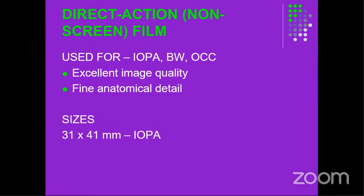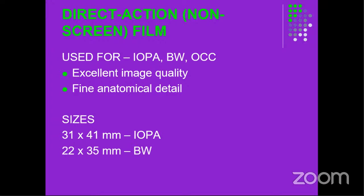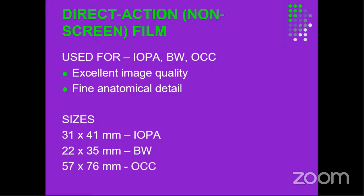We have one that measures 31 by 41 millimeters for the intraoral periapical. For bitewings it is 22 by 35 millimeters. For occlusal radiographs, which is a bit larger, it is 57 by 76 millimeters. For bitewings we can also have one that is a bit longer than the standard, used to take long bitewings, so you are able to get all the teeth from the premolars to the third molars.